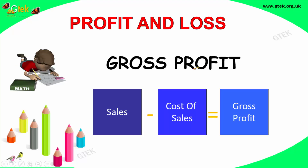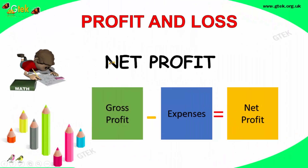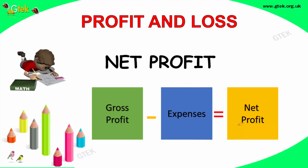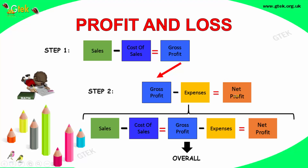What is the gross profit? Gross profit is nothing but sales minus cost of sales — it is referred to as gross profit. And net profit is nothing but the gross profit minus the expenses happened — that's your net profit, the amount in your hand. So sales minus cost of sales is gross profit, and gross profit minus expense is net profit. This is how you will be calculating profit and loss.